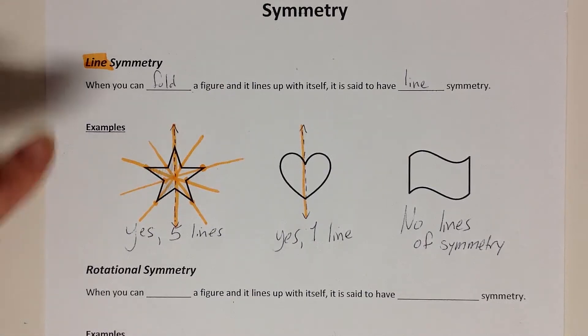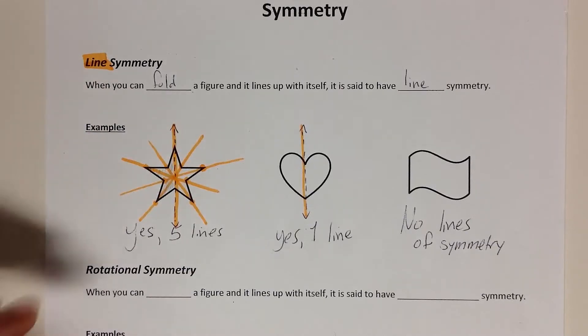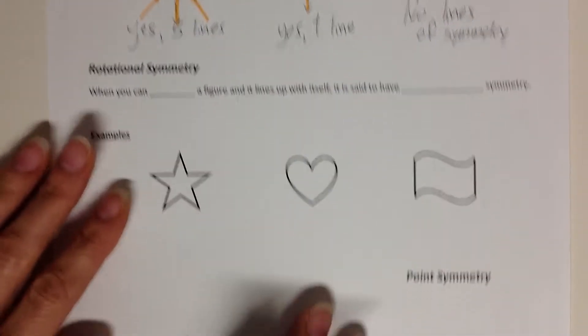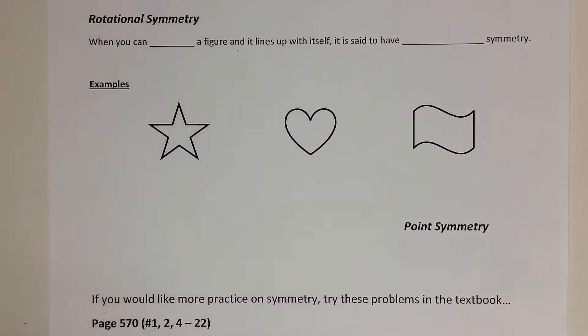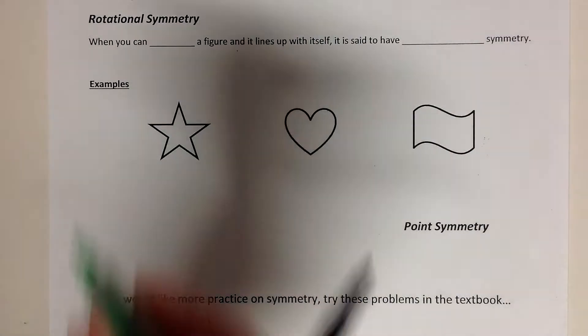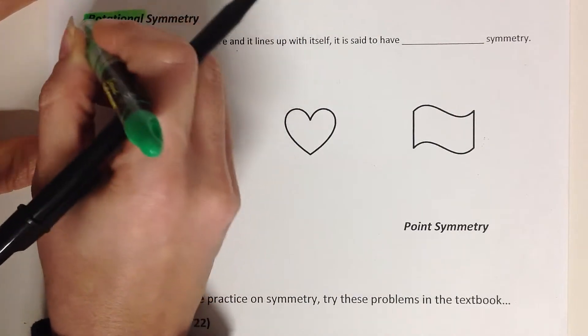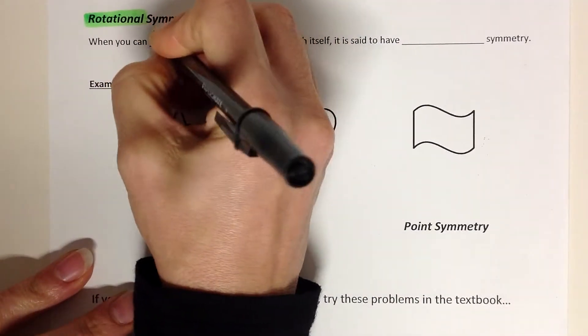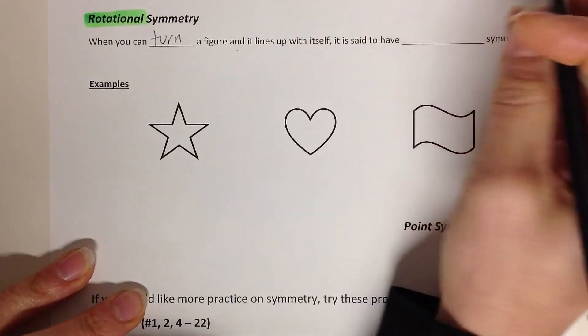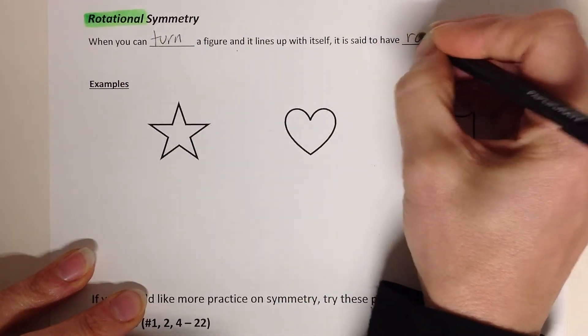Okay, so the other type of symmetry - you've got line symmetry, and that's your folding over lines, right? But the other one that you could be talking about is rotational symmetry. And on those, you're going to rotate. If you think about what it means to rotate, it's when you turn a figure and it lines up on itself. It's said to have rotational symmetry.